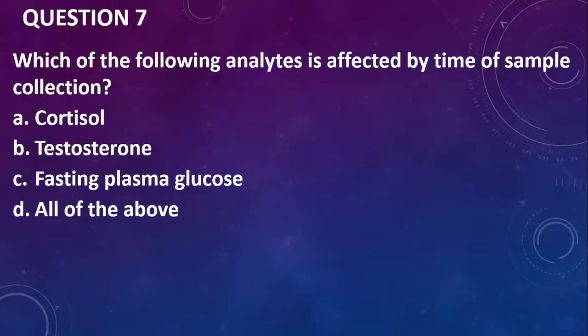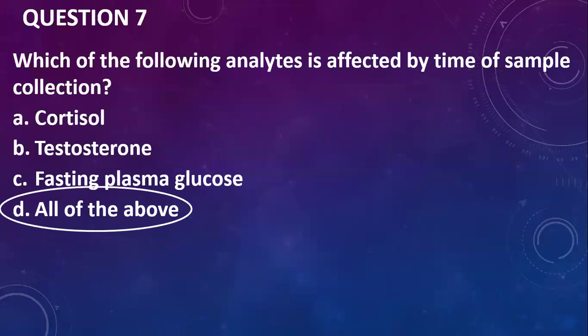Question seven: which of the following analytes is affected by the time of sample collection? Cortisol — yes. Testosterone — yes. Fasting plasma glucose — yes. So all of the above. Cortisol is very much affected by time; we have the 9 AM cortisol or the midnight cortisol, but you need to record the time. Testosterone also has highs and lows, so we take it usually in the morning. Fasting plasma glucose must be taken between eight and ten hours, or the sample becomes invalid.